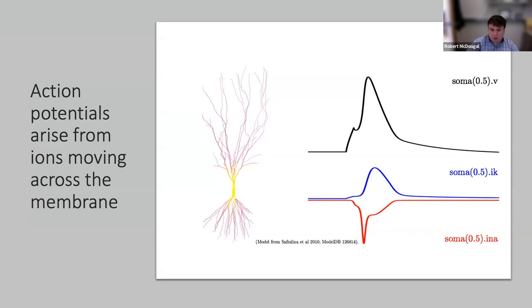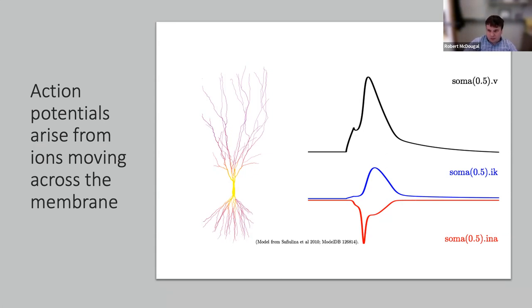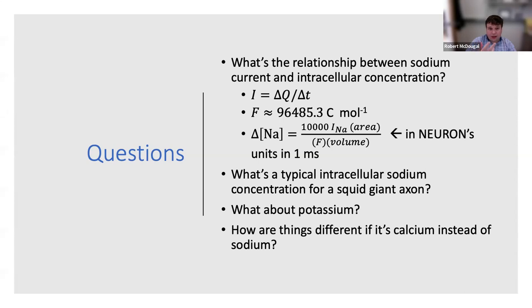Fundamentally, when we talk about an action potential, a sodium current raises the membrane potential and a potassium current lowers it. A current is the movement of charge, so a sodium current moves sodium ions, and a potassium current moves potassium ions. For a big Hodgkin-Huxley cell in a squid giant axon the concentration changes are negligible, but for smaller diameter cells in mammals this matters. We have homeostatic mechanisms trying to keep everything stable, but in disease and pathology these sometimes fail.